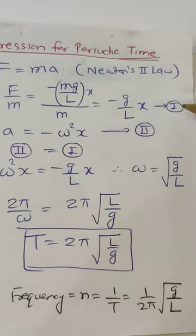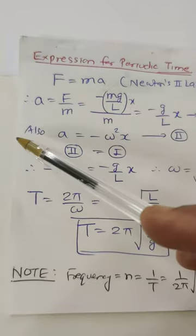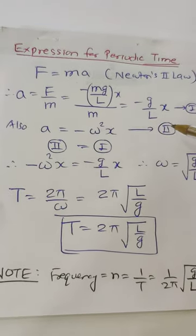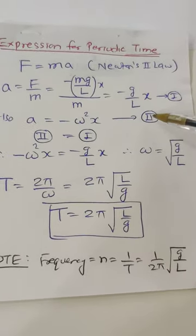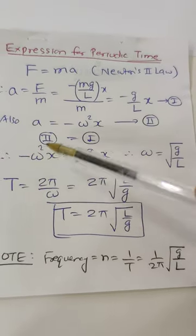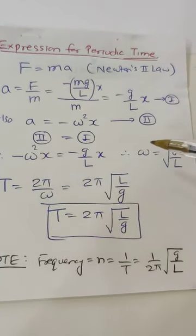Also a equal to minus omega square x, equation number 2. Equate 2 and 1. Therefore minus omega square x equal to minus g upon lx. x x cancel. So omega will be root of g upon l.